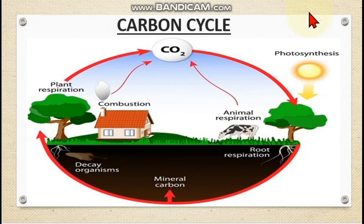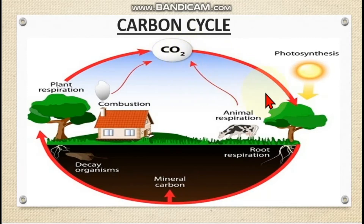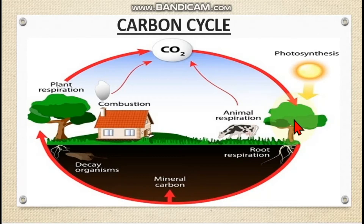Carbon is constantly being removed from and released into the environment in the form of carbon dioxide, so the carbon dioxide concentration in the environment remains relatively constant. During photosynthesis, green plants absorb carbon dioxide from the atmosphere and use it to manufacture carbohydrates, for example glucose. That glucose is then converted into other organic compounds like amino acids and proteins.